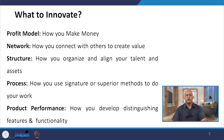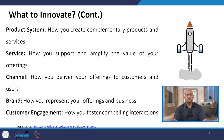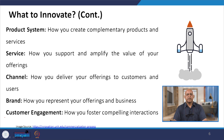Product performance — how you develop distinguishing features and functionality. Product system — how you create complementary products and services, and support and amplify the value of your offerings. How you deliver your offerings to customers through channels and brand. How you represent your offerings and business. And how you foster compelling interactions with customers to increase customer engagement.